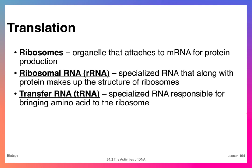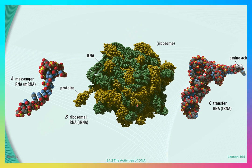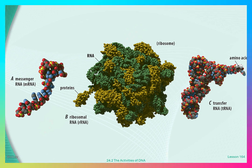The third type of RNA is called transfer RNA, which is a specialized RNA that brings amino acids to the ribosome in order to produce a protein. So these are the three different types of RNA: messenger RNA, which is a single strand of nucleotides; ribosomal RNA, which is mixed with protein to form the ribosome; and transfer RNA, which is a piece of RNA with an amino acid attached to the end of it.